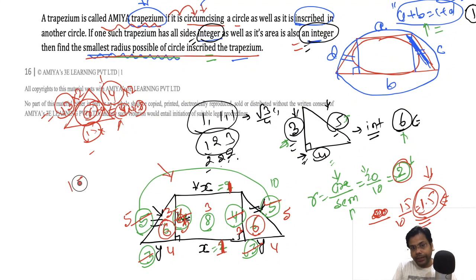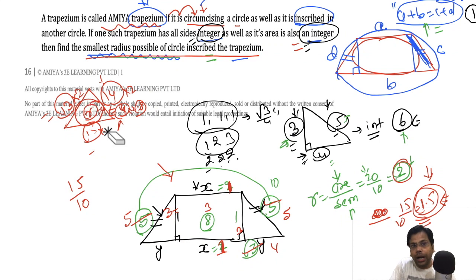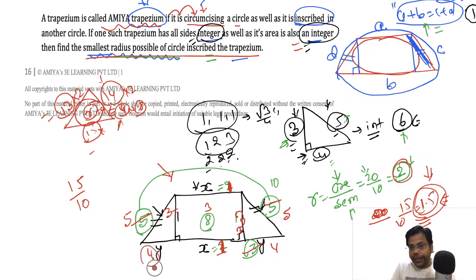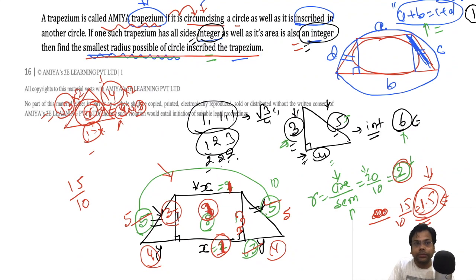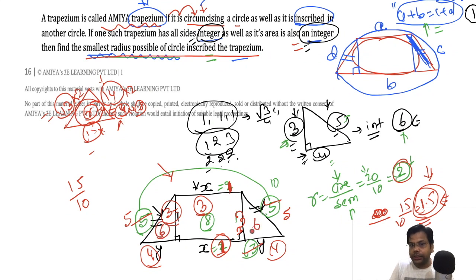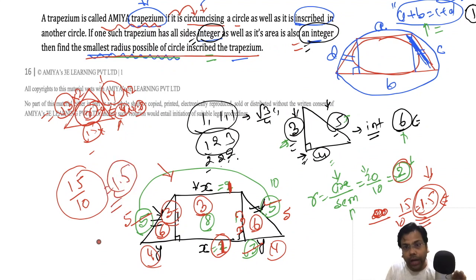Let me verify: the in-radius is 15 by 10, which is 1.5. The trapezium has sides 5, 5, and parallel sides such that the figure uses the 3-4-5 triangle. Areas of the two triangles are 6 and 6 totaling 12, plus the rectangle gives total area 15. Semi-perimeter is 10. So in-radius is 15 divided by 10 equals 1.5. This confirms the answer.